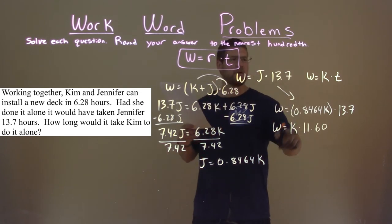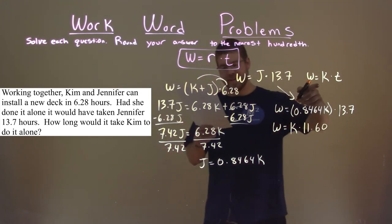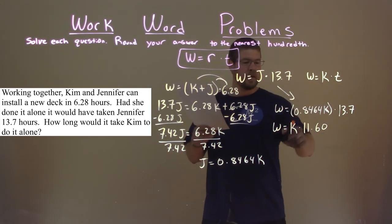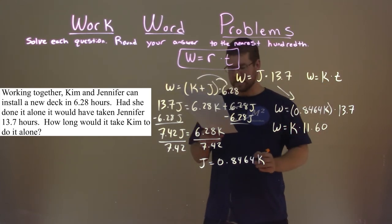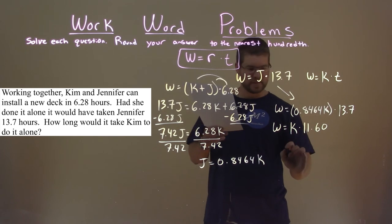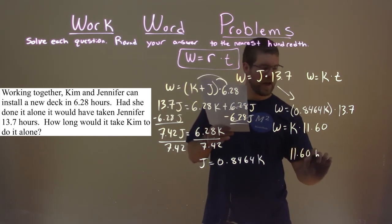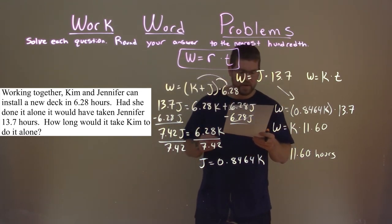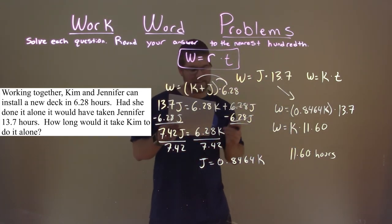And so notice how it matches up with the formula for Kim's work. The time it takes, whatever Kim's work rate is, it will take her 11.6 hours. So 11.60 hours is now how long it would take Kim to install a new deck.